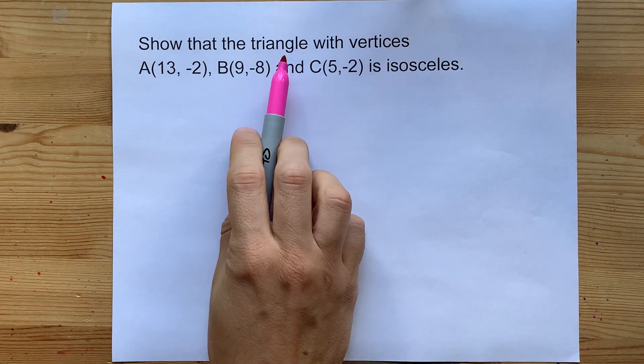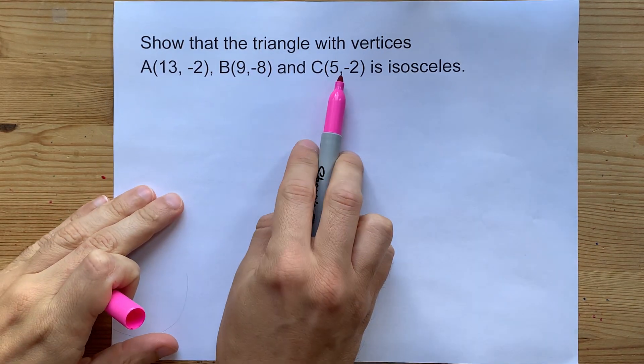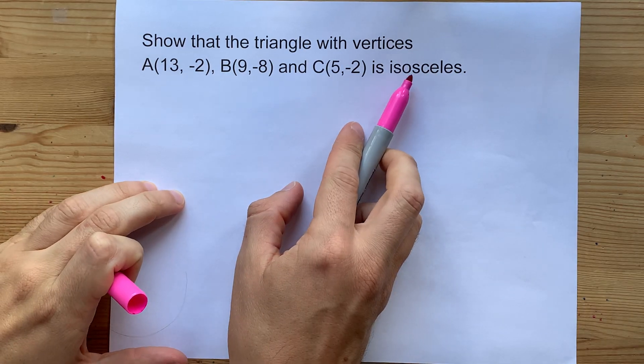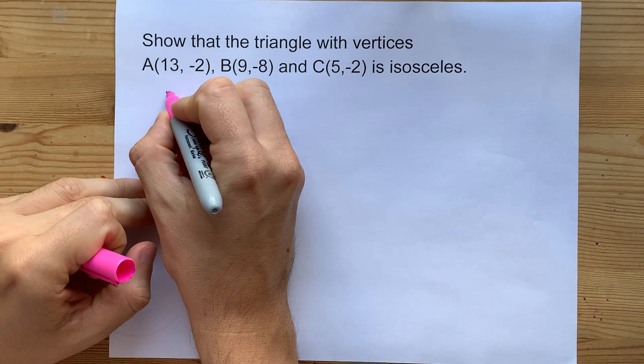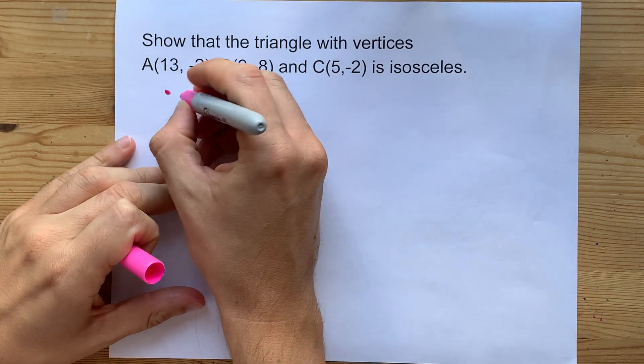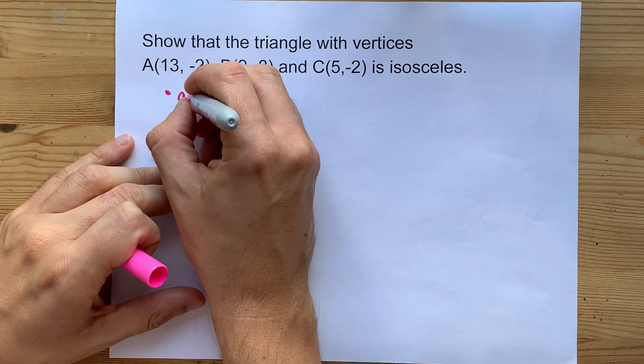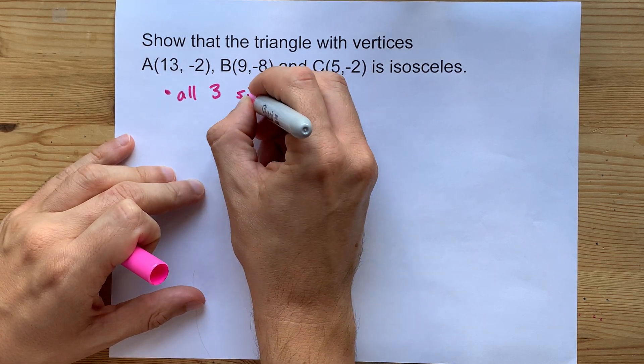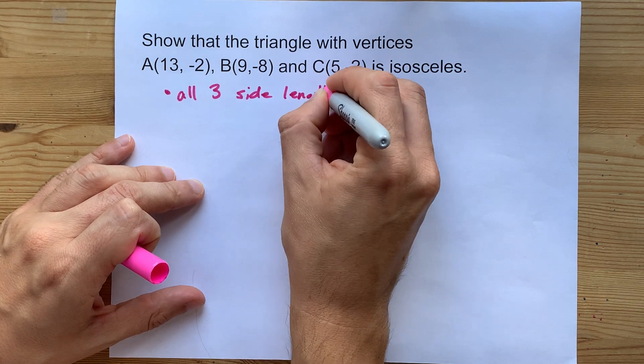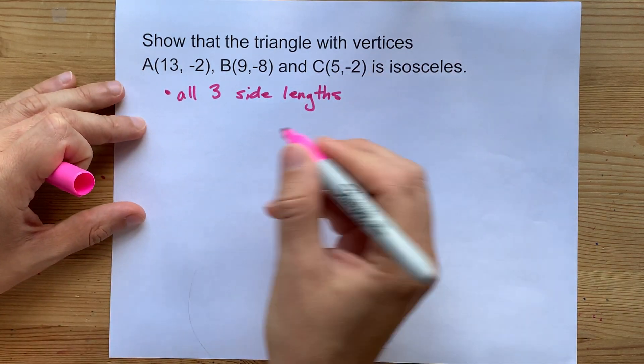How can you show that a triangle with given vertices is either isosceles, equilateral, or scalene? Well, the answer is you need to find all three side lengths, and that means you're going to need to do three distance or length formulas.